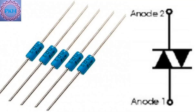Symmetrical conduction: the DIAC is a bidirectional device, meaning it can conduct current in both directions — forward and reverse. It is used mainly in AC circuits where the voltage alternates in polarity. In both the positive and negative half cycles of an AC waveform, the DIAC behaves the same way.